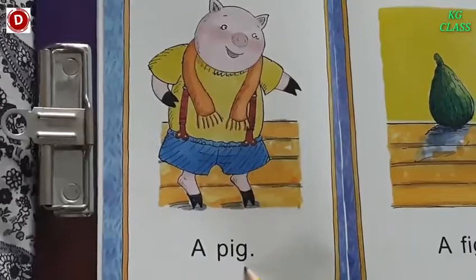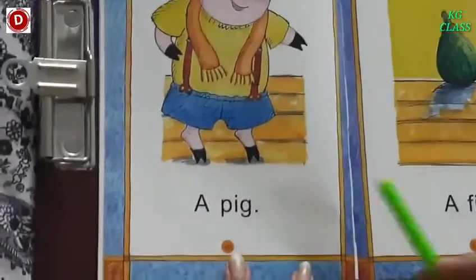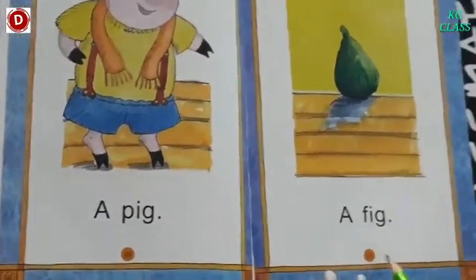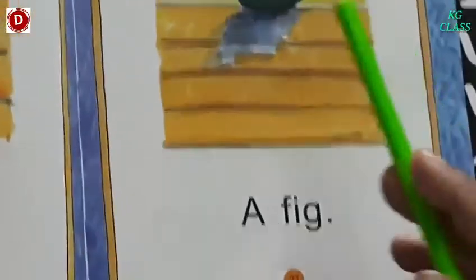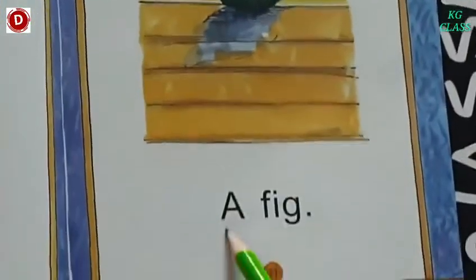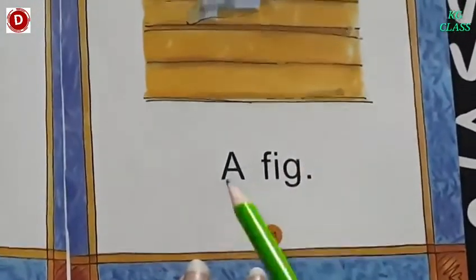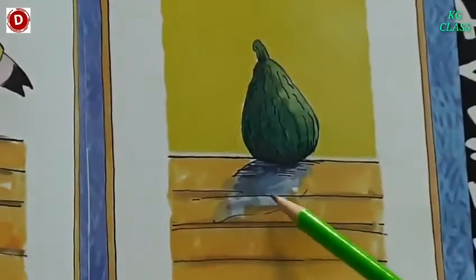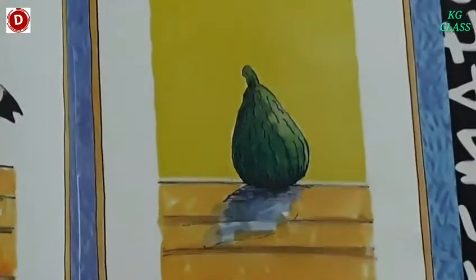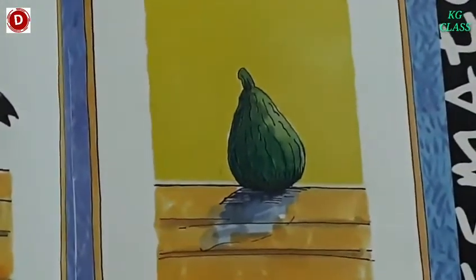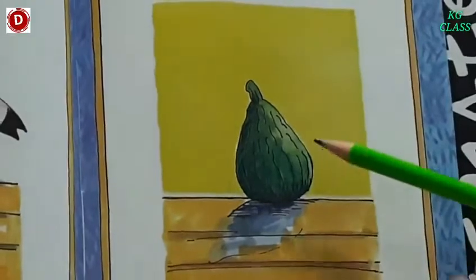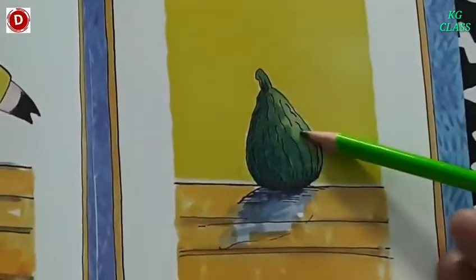Children, you also speak with me. Now the next page, page number 21. Look at this picture. This is a picture of a f-ig, fig. Fig is a fruit — in Hindi we call it anjeer. What do we call fig? Anjeer. So what is here? A fig — ek fig hai.